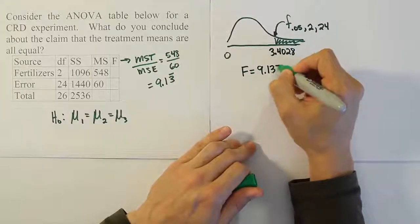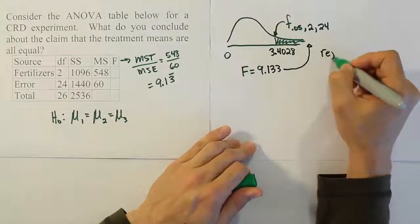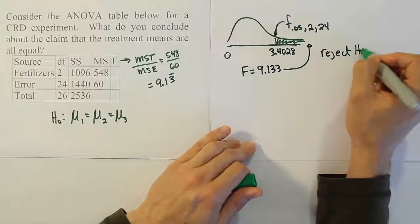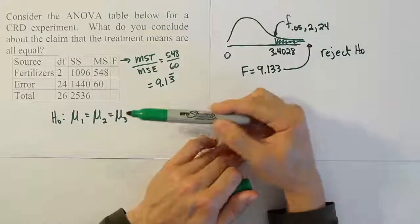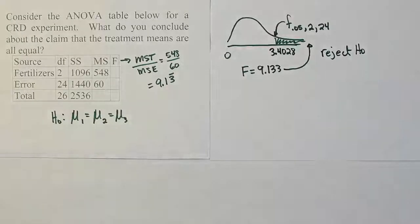The 9.133 value of course lands over here. So we conclude that we should reject H0 and support the alternative. But if we're rejecting H0, we're rejecting the idea that the treatment means are all equal. So if that's our claim, we're going to reject the claim in this problem.